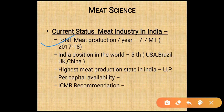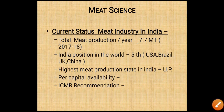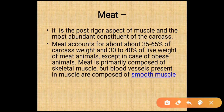Meat science — current status of meat industries in India: the total meat production in India is about 7.7 million tons. India's position in the world is fifth. The ranking is: USA first, then Brazil, then UK, then China. The highest meat production in India is in the state of Uttar Pradesh.